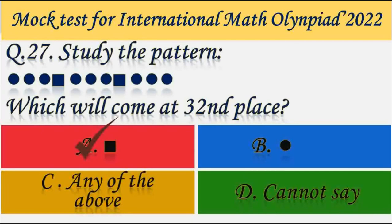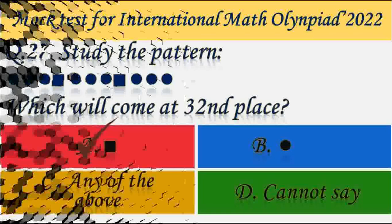Question number 27. Study the pattern. Which shape will come at the 32nd place? Answer — Option A, Square. In the pattern, the 4th place has a square, the 8th place will also be a square. In the same manner, the 32nd place will also be a square. So option A is correct.